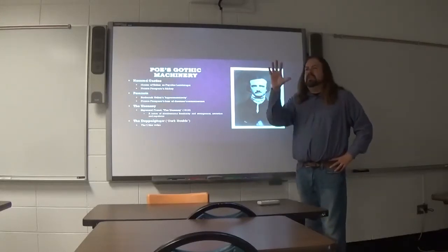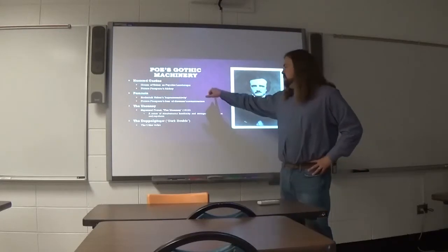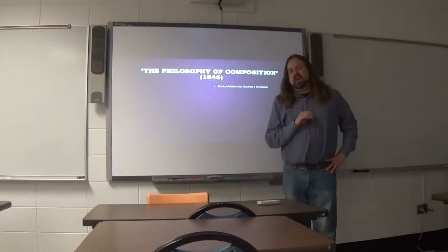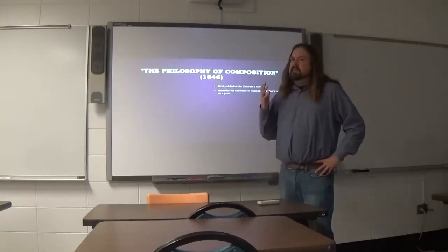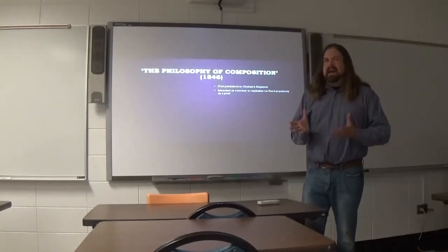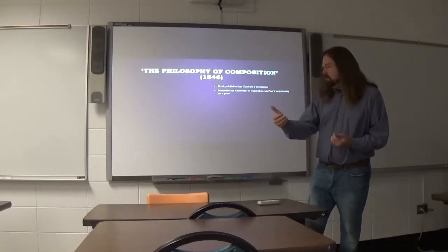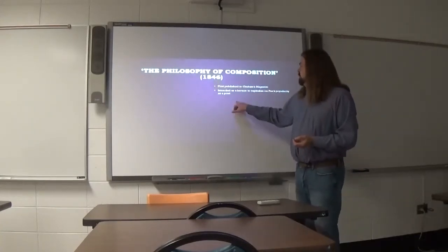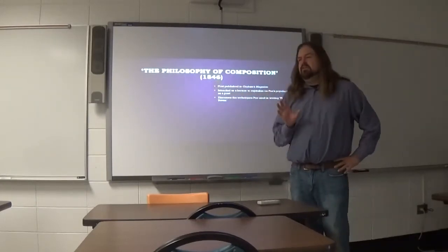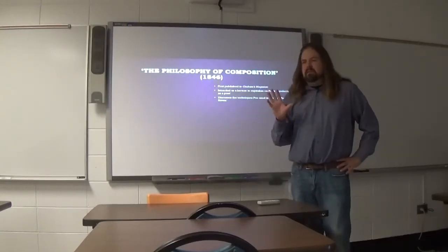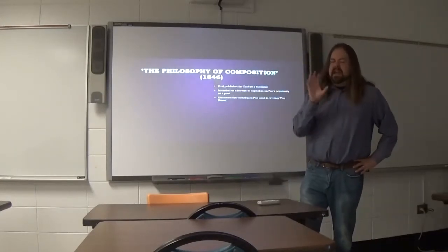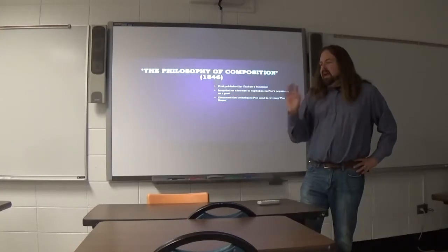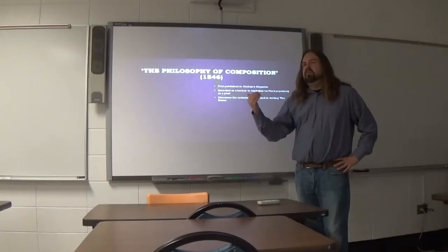Let's start by talking about the theories Poe lays out in The Philosophy of Composition. This is an essay published in 1846, first appearing in Graham's Magazine. Poe had written it as a lecture he could give on speaking tours to capitalize on his popularity as a poet, specifically on the popularity of The Raven. The essay is primarily concerned with the techniques Poe used in composing The Raven — it's a kind of explication of methods used in the poem, and proportionally discusses how you could write a similar poem yourself.